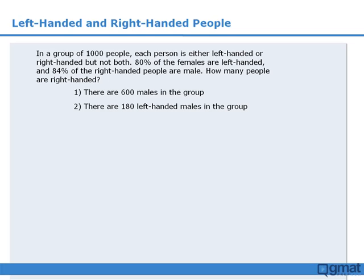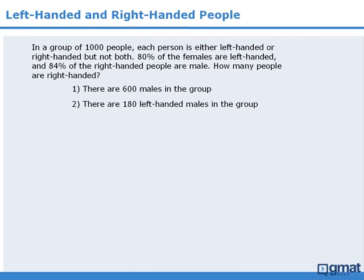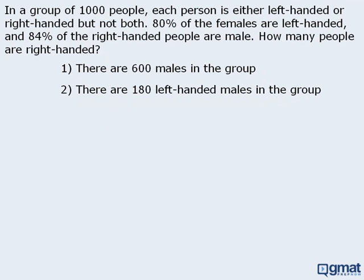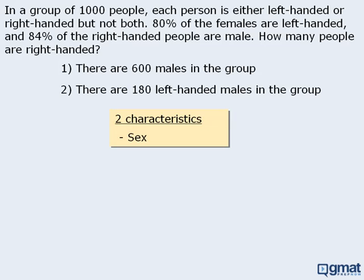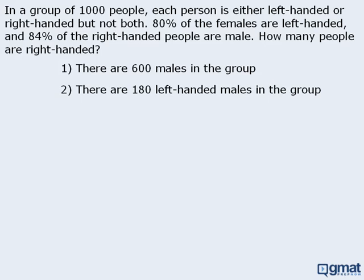In this question we have a population of people, and there are two characteristics associated with each person: the person's sex, male or female, and the person's left-handedness or right-handedness. As such, we may be able to solve this question using the double matrix method.